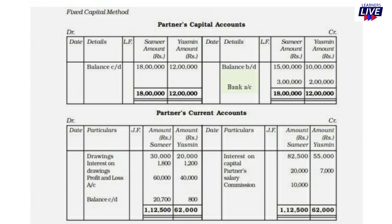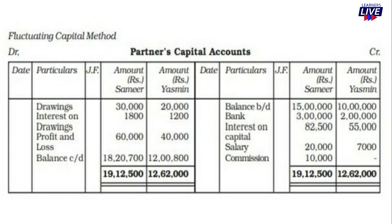We are now prepared for the fixed capital account. In the fluctuating capital method, we prepare a single account. The opening capital is Rs. 15,00,000 and Rs. 10,00,000. Additional capital on July 1st: Rs. 3,00,000 and Rs. 2,00,000. Interest on capital: Samir Rs. 82,500, Yasmin Rs. 55,000, credited.